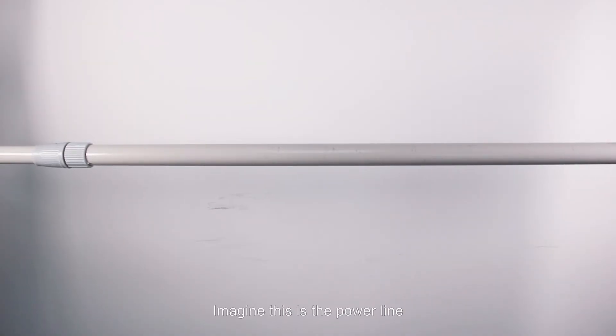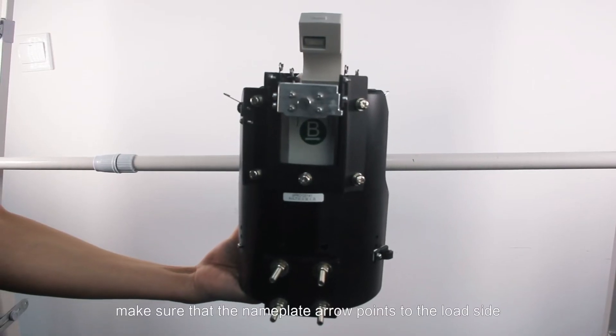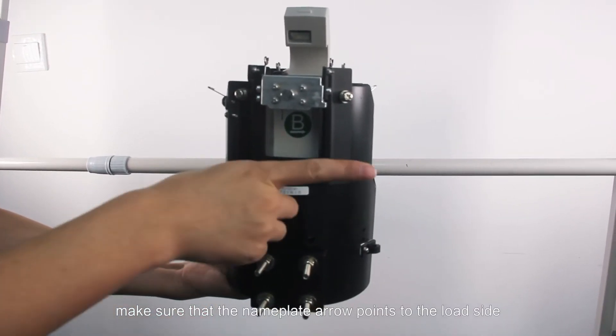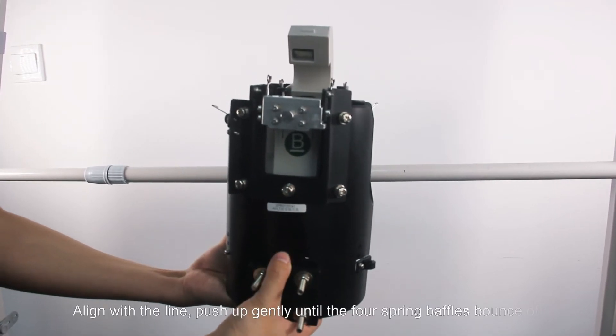Imagine this is the power line. While mounting the sensor make sure that the nameplate arrow points to the load side. Align with the line.